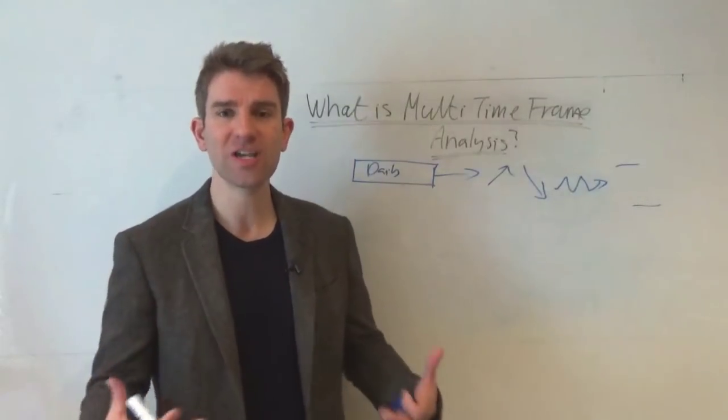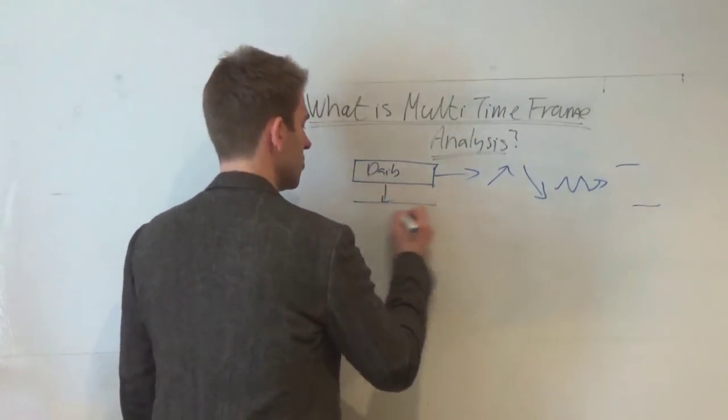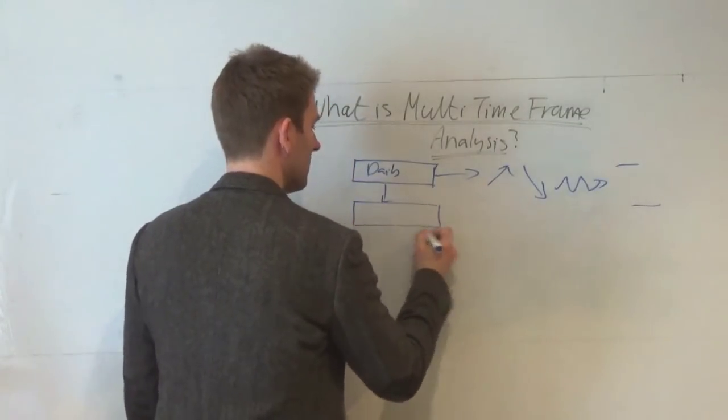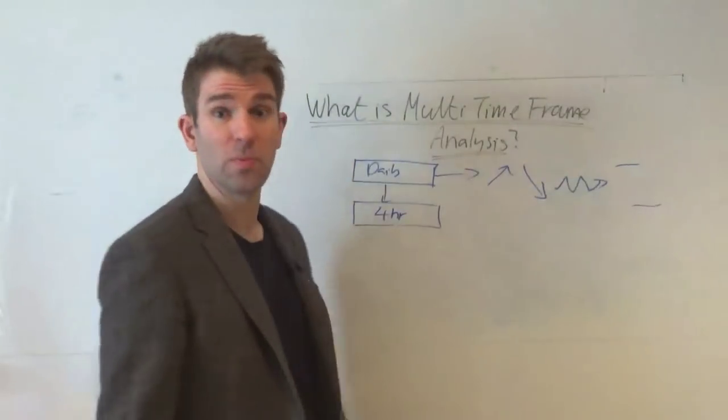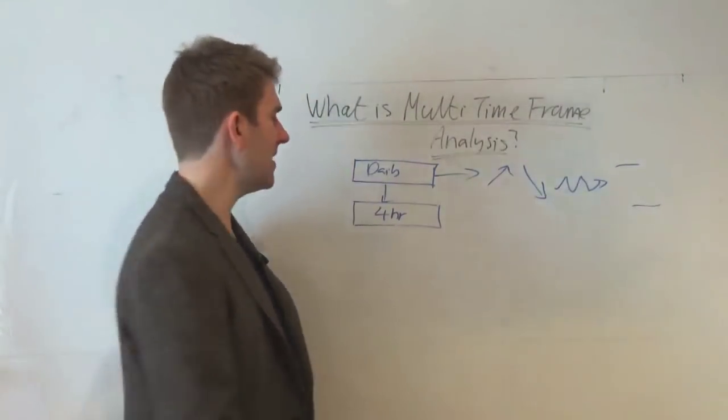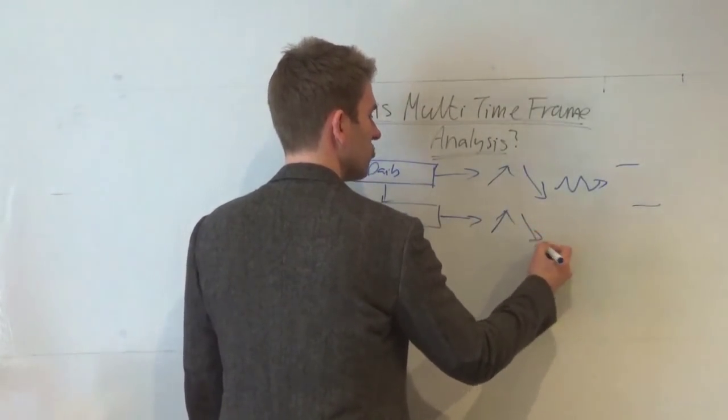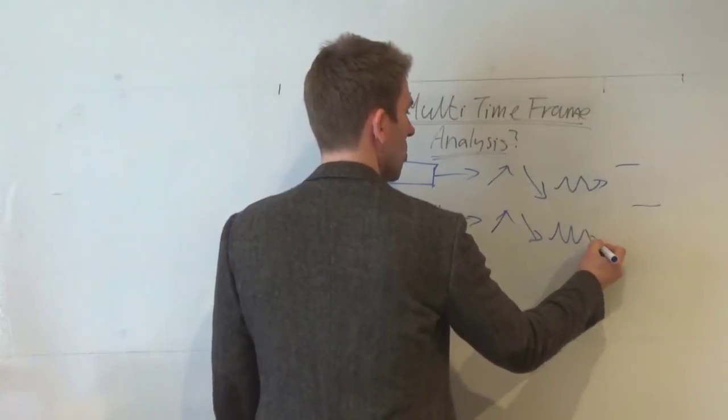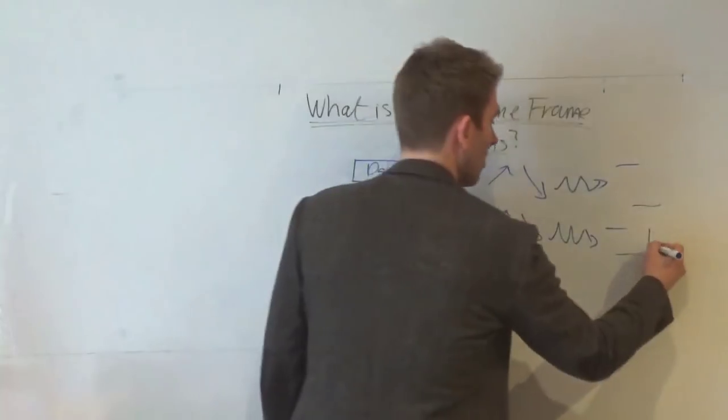And then we step down to a lower time frame, and that could be—again this is very subjective and it's all very personal—but you could go down to a four hour. So you've got your GBP/USD, whatever it may be. And then you do the same thing. You say, is it in an uptrend, is it in a downtrend, are we in a range-bound environment? Where are the key levels on the four hourly? What have we been doing? What's the volume like? What's the participation like?